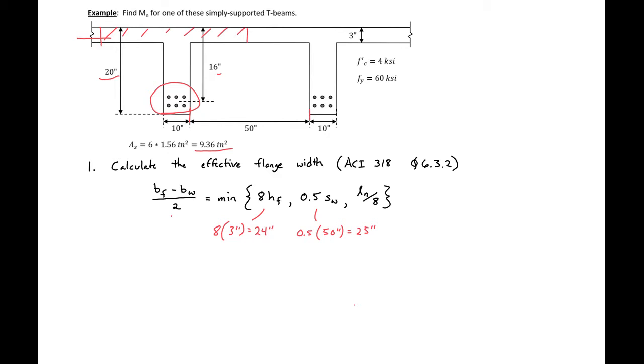I forgot to mention our span length of these beams is 14 feet. So we can calculate our ln over 8. We'll have 14 feet times 12 inches per foot divided by 8, which gives us 21 inches. So 21 inches is the minimum of our 3 values. That's the value we're going to use moving forward.